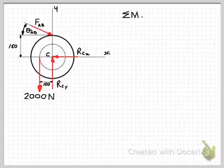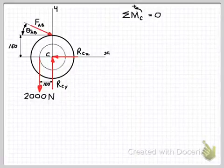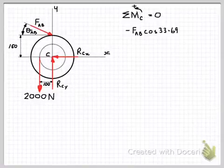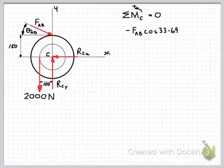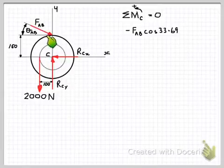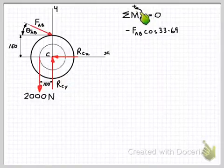So sum of the moments about point C, anti-clockwise as positive, all equal to zero. And we can start by writing out the components. So we have minus FAB cos 33.69. So looking at this force here, we're going to have a horizontal component and that will be FAB cos 33.69. And it will tend to cause this ratchet to rotate clockwise, which is in the negative direction according to our chosen sign convention.